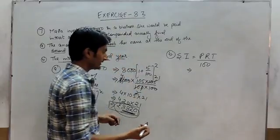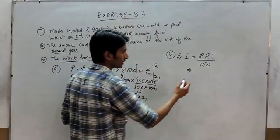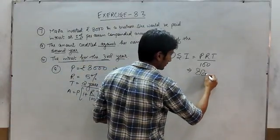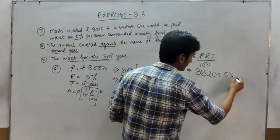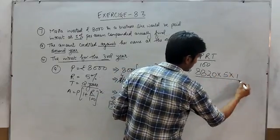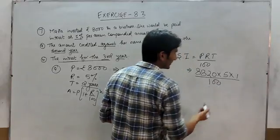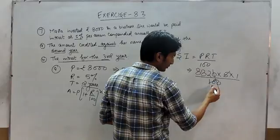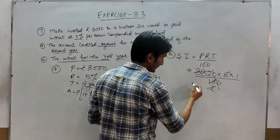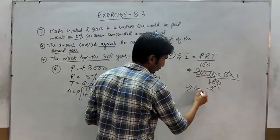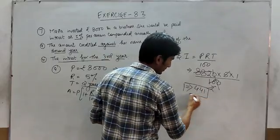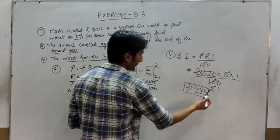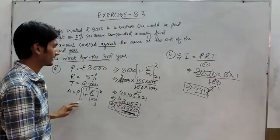So principal in this case will be 8820, rate will be 5% and time will be 1 year. Because you have to find the interest for the third year. So cancelling this 5, 2 and this is 4, 4, 1. So this much Rupees will be the interest for the third year.